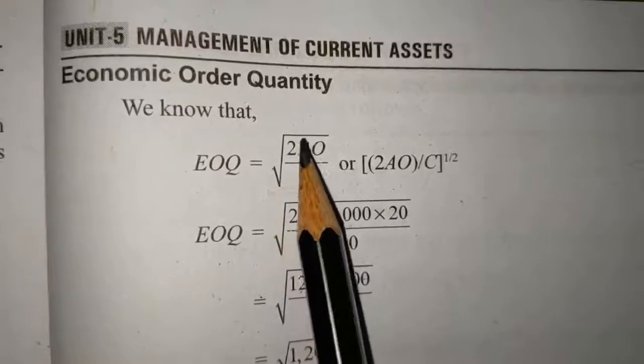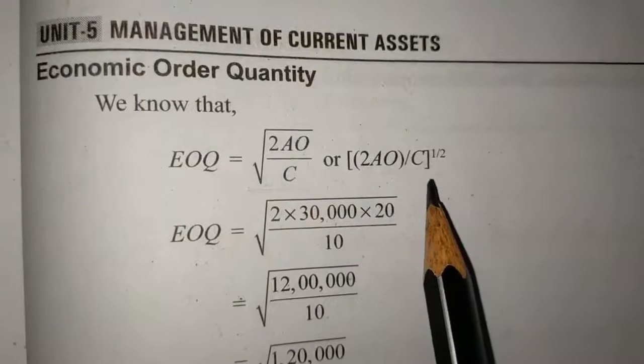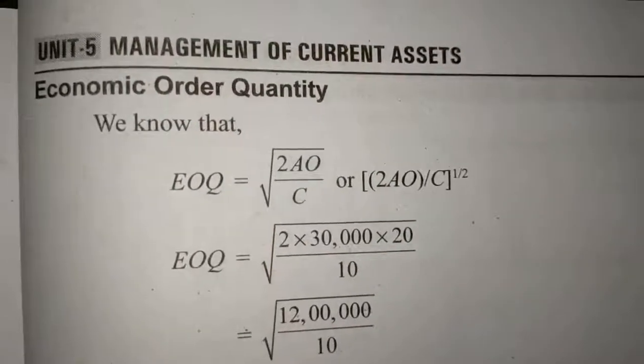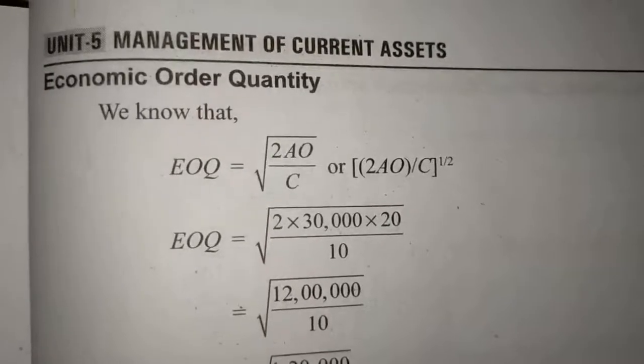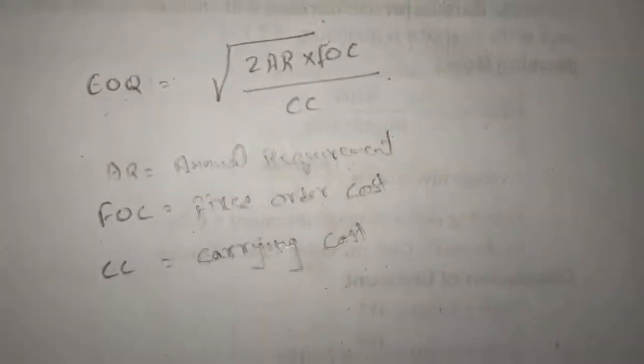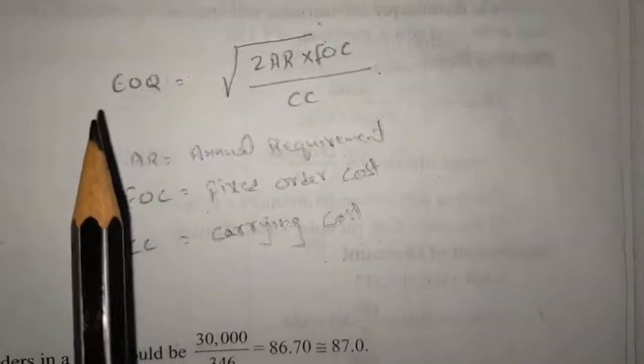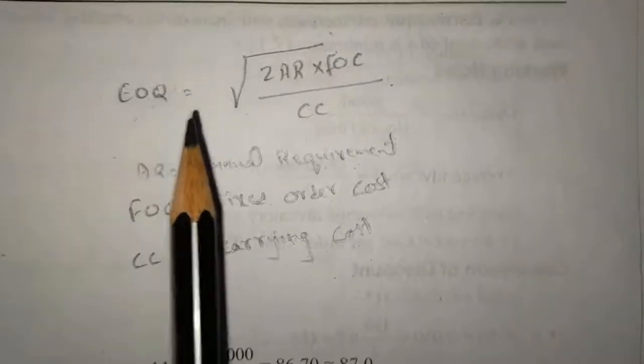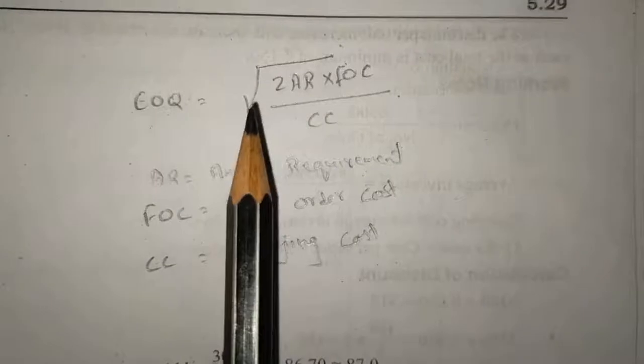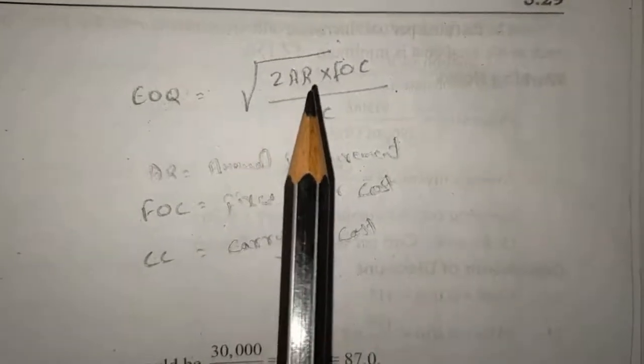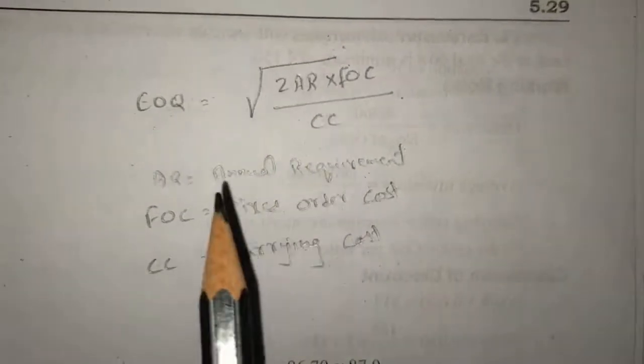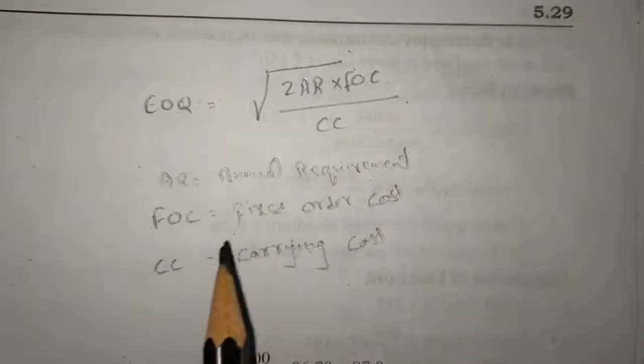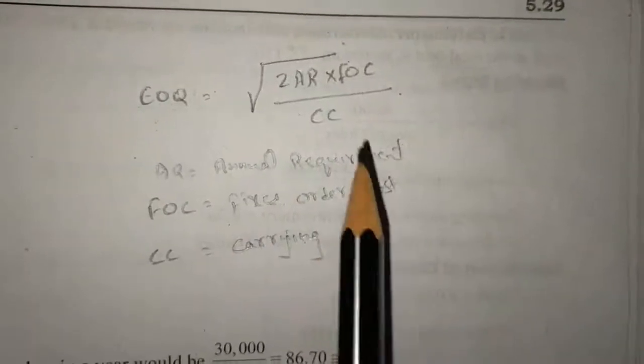You can change the representation in other ways as well. I'll show you during the problem. You can change the notations in this form as well: EOQ equals square root of 2AR times FOC divided by CC. AR stands for annual requirement, FOC is fixed order cost, and CC is carrying cost.